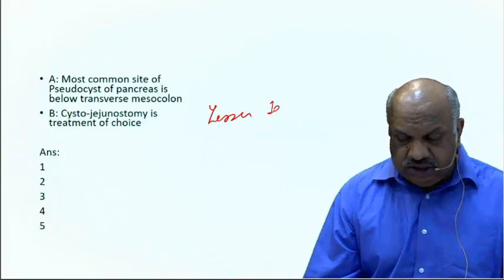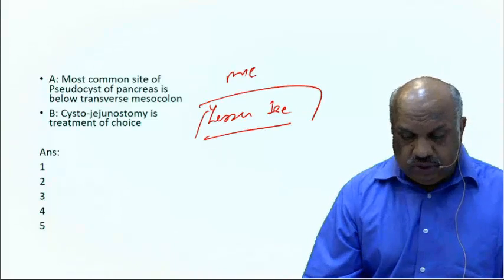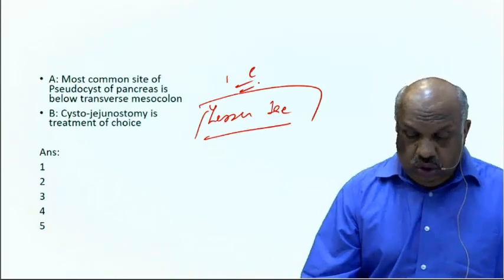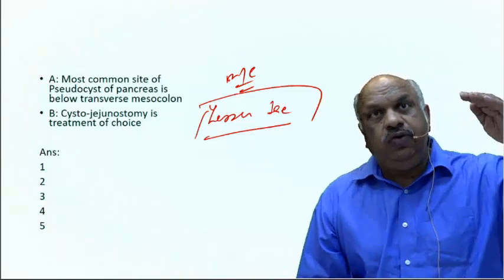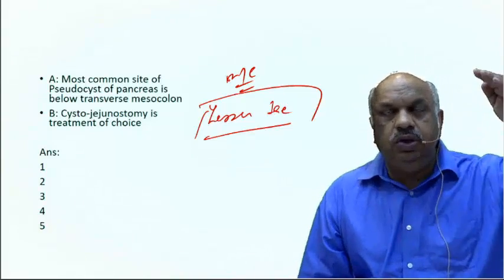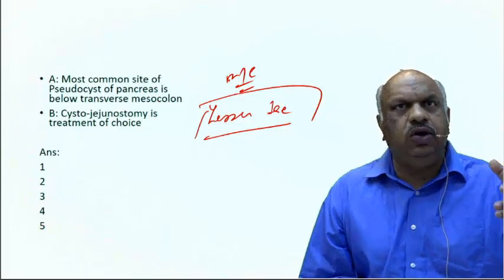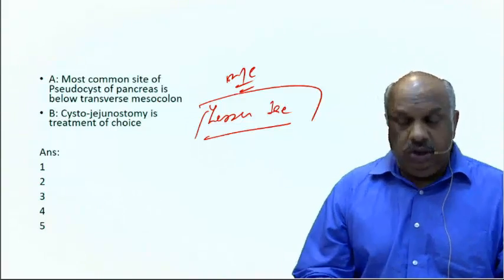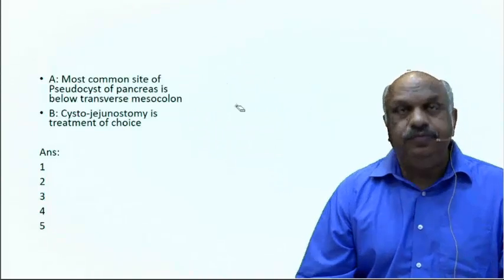The most common site for pseudocyst is the lesser sac, behind the stomach. Pseudocysts can form anywhere from the diaphragm down to the pelvis, but more than 80% occur behind the stomach in the lesser sac.